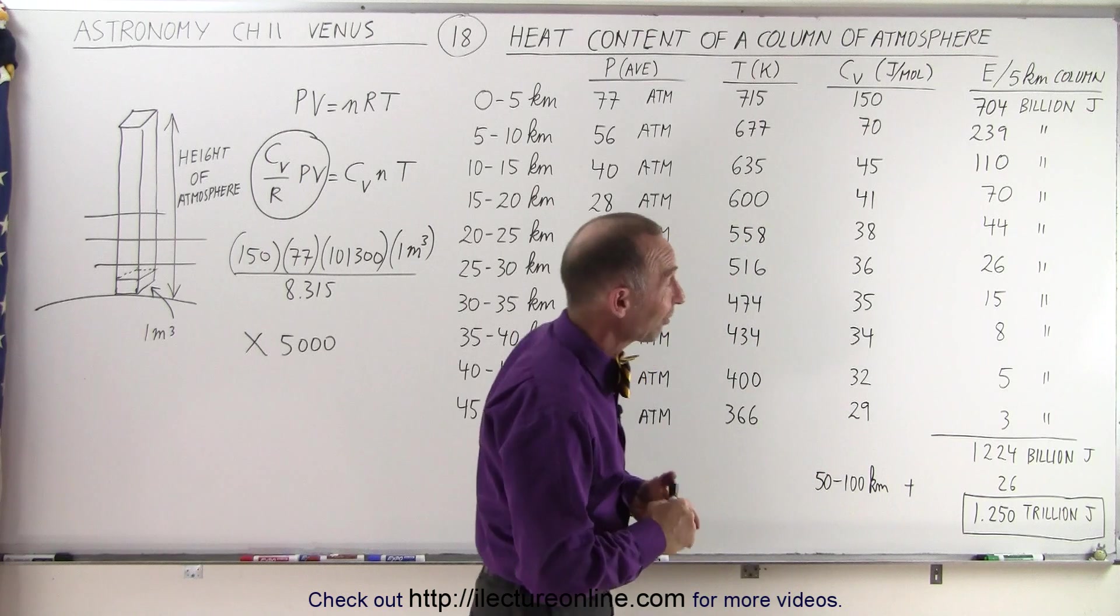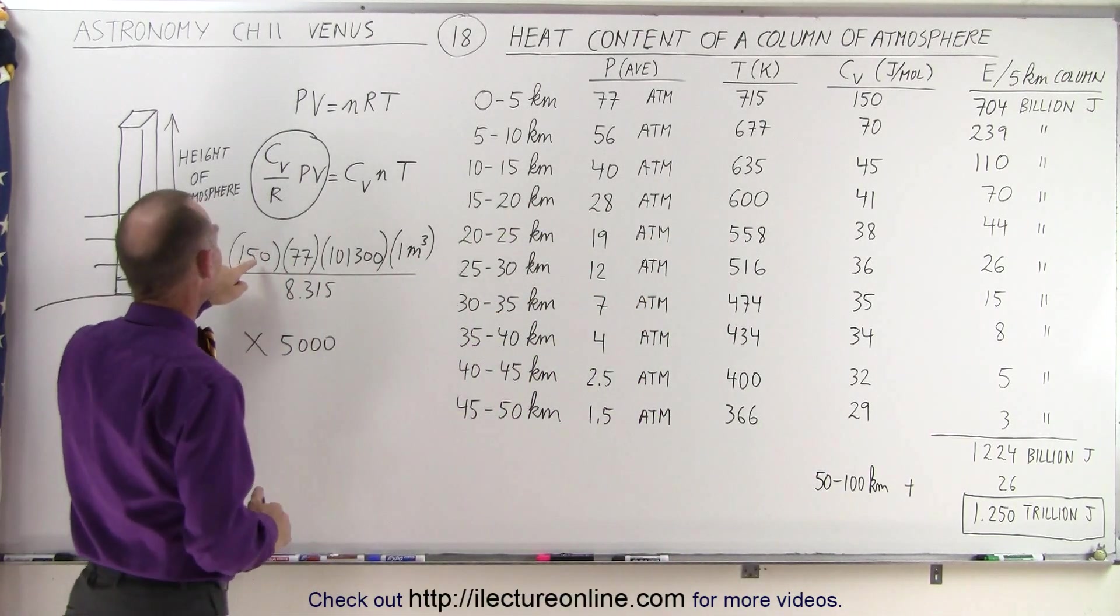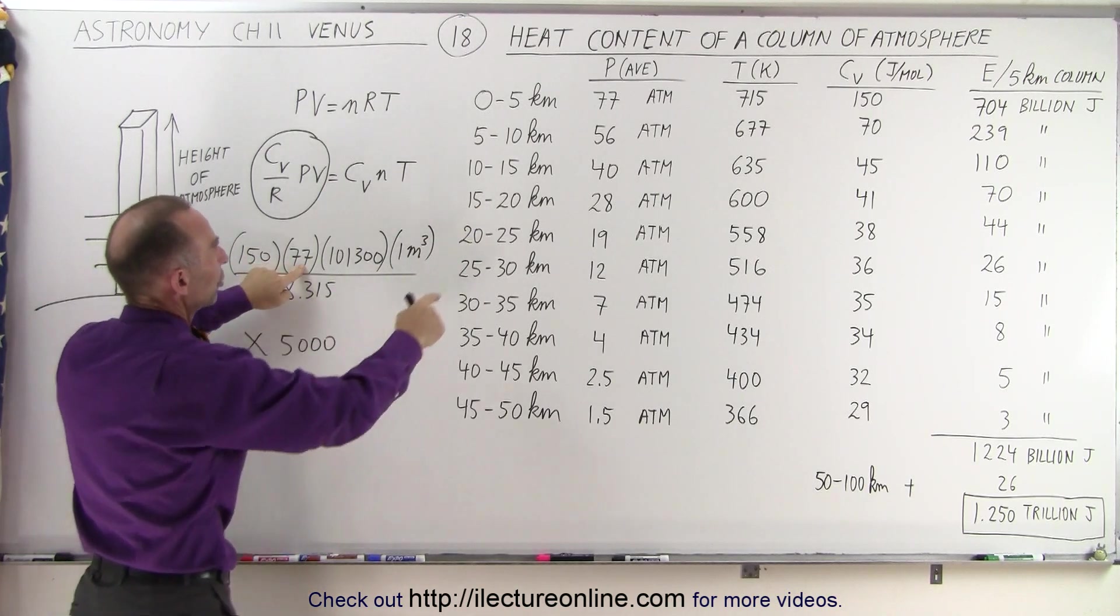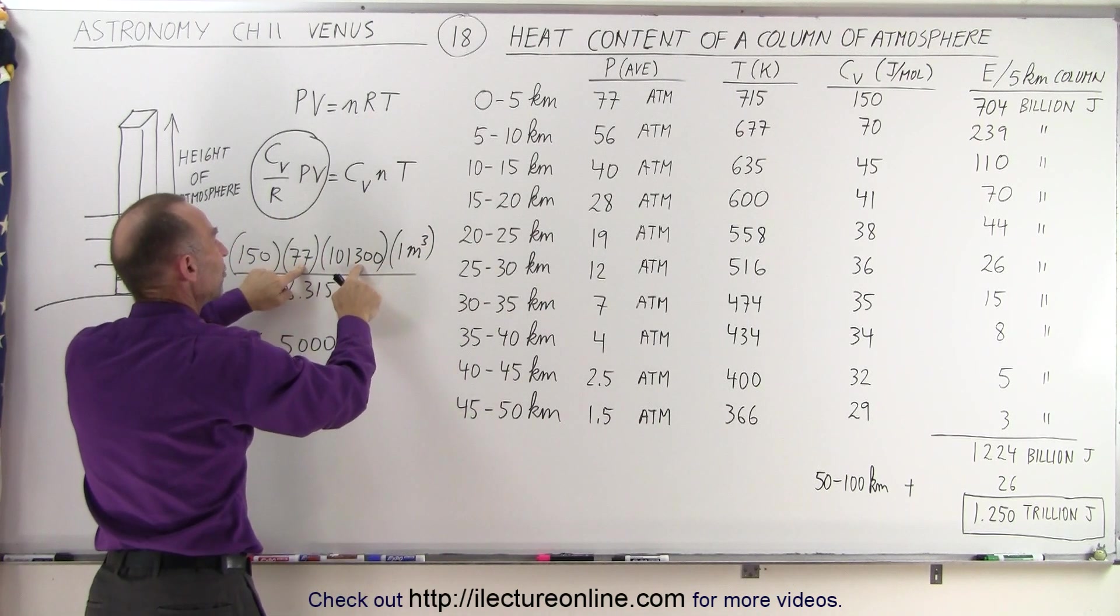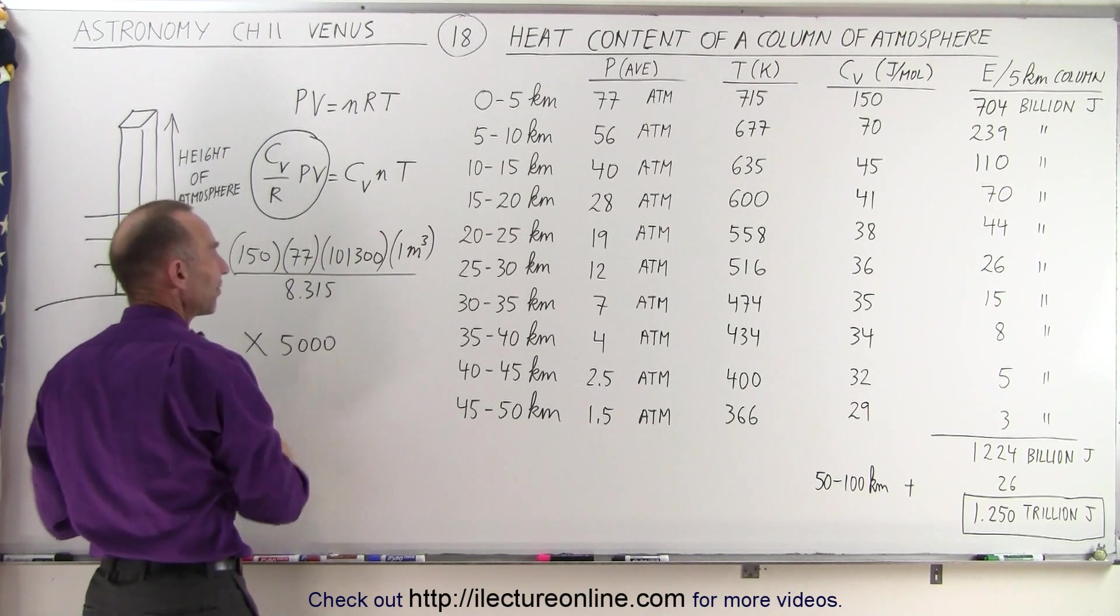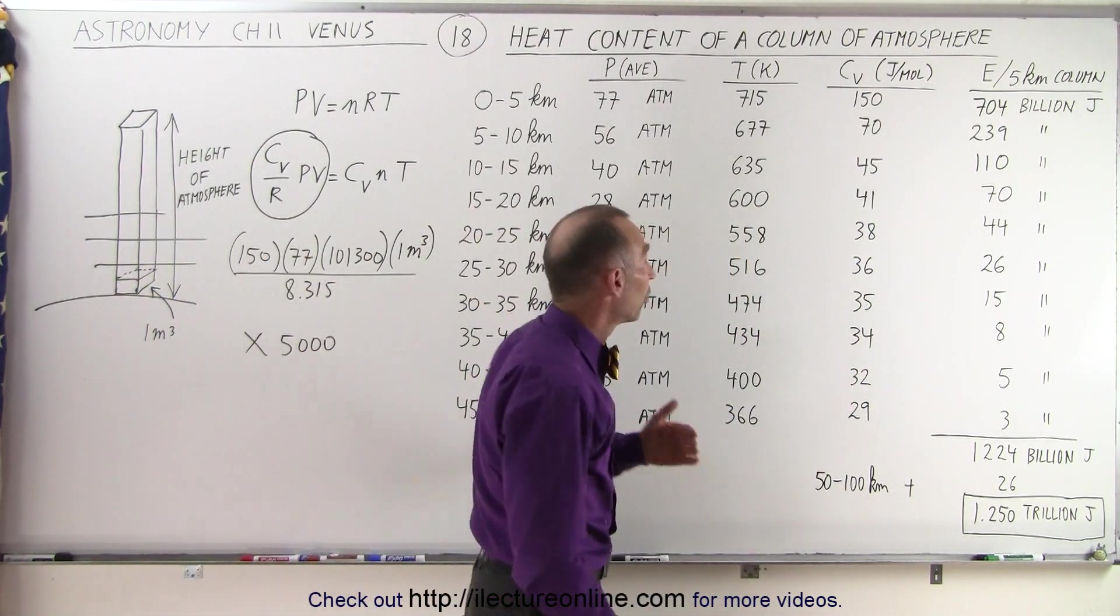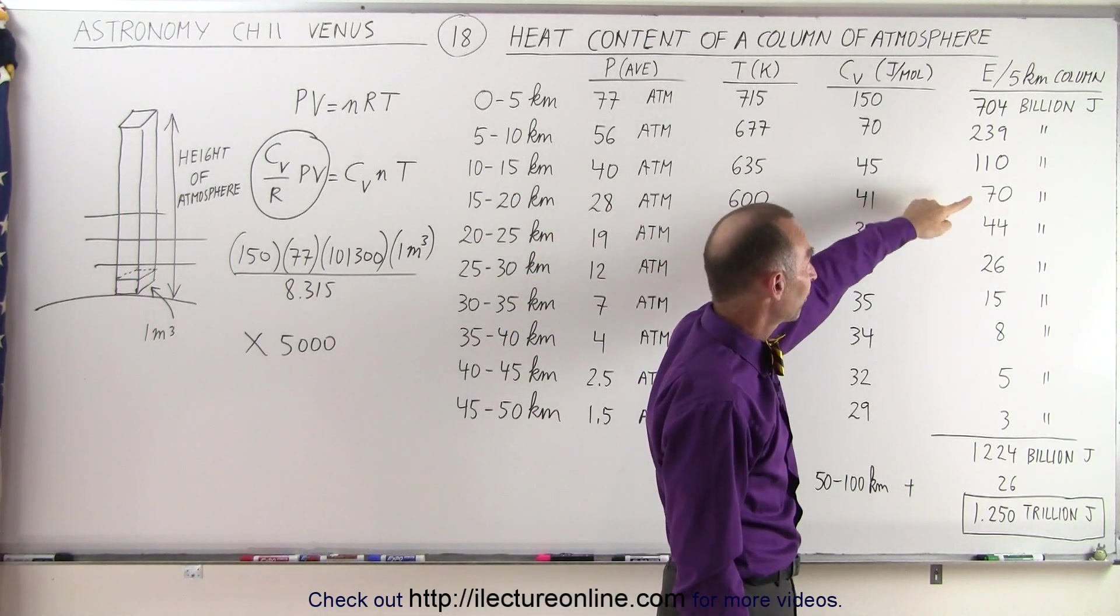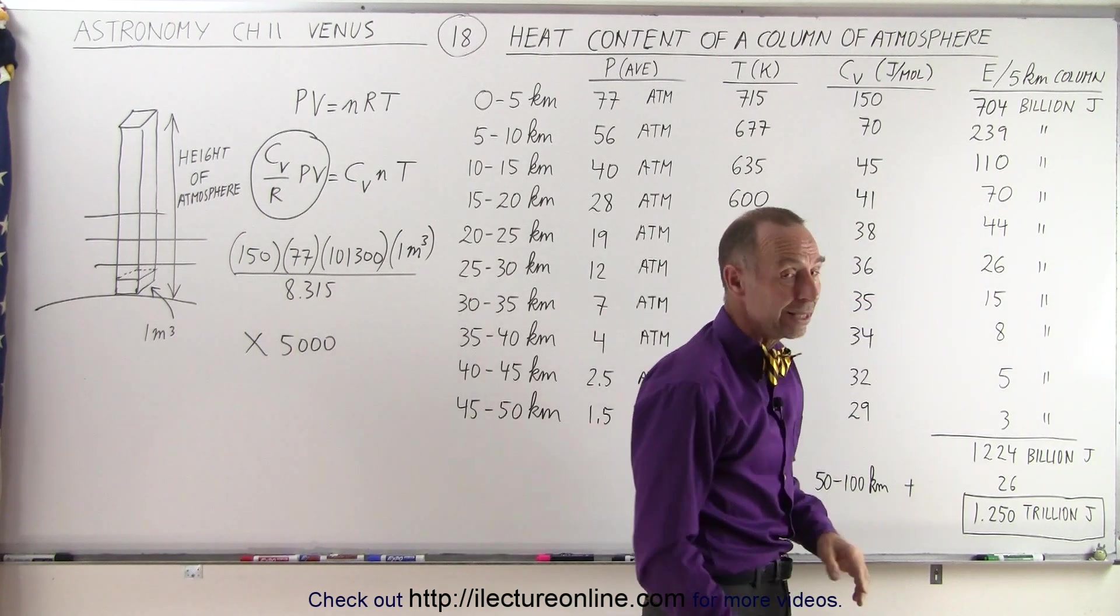That's a lot of energy. We do it again for the next 5 kilometers. In that case, we use 70 instead of 150. The pressure here would be 56, still the same value for each atmosphere, one cubic meter, divided by the same constant times 5,000, and now we reach 239 billion joules. We keep doing that for the next 5 kilometers: 110 billion, 70 billion, 44 billion, 26 billion, 15, 8, 5, and 3.